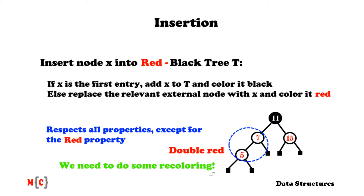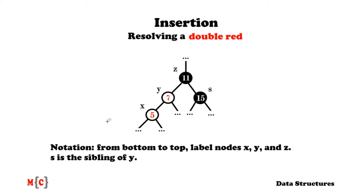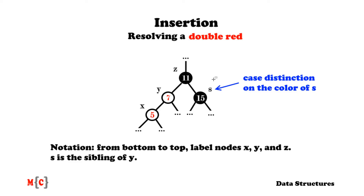This situation is referred to as a double red, and we need to do some recoloring to resolve it. For convenience, let's introduce some notation. From bottom to top we label the nodes x, y, and z. And s will be the sibling of y — so x is the newly inserted node, y is its parent, z is the grandparent of x, and s can also be referred to as the uncle of x. We will resolve a double red by performing a case distinction on the color of s.